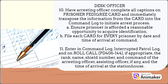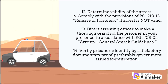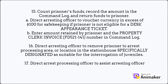Step 11: enter in the command log, interrupted patrol log, and on roll call PD 406-144 if appropriate, the rank, name, shield number, and command of the arresting officer and assisting officer if any, and the time of arrival at the station house. Step 12: determine validity of the arrest; comply with the provisions of PG 210-13, Release of Prisoners, if arrest is not valid. Step 13: direct arresting officer to make a thorough search of the prisoner in your presence in accordance with PG 208-05, Arrests General Search Guidelines. Step 14: verify prisoner's identity by satisfactory documentary proof, preferably government-issued identification.